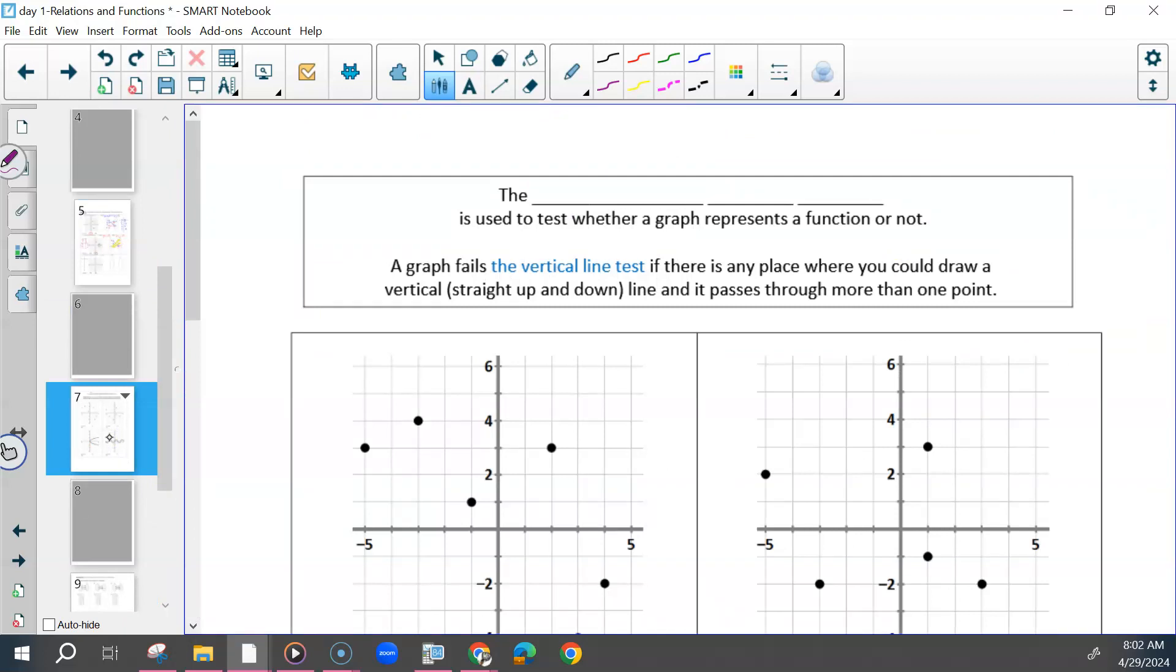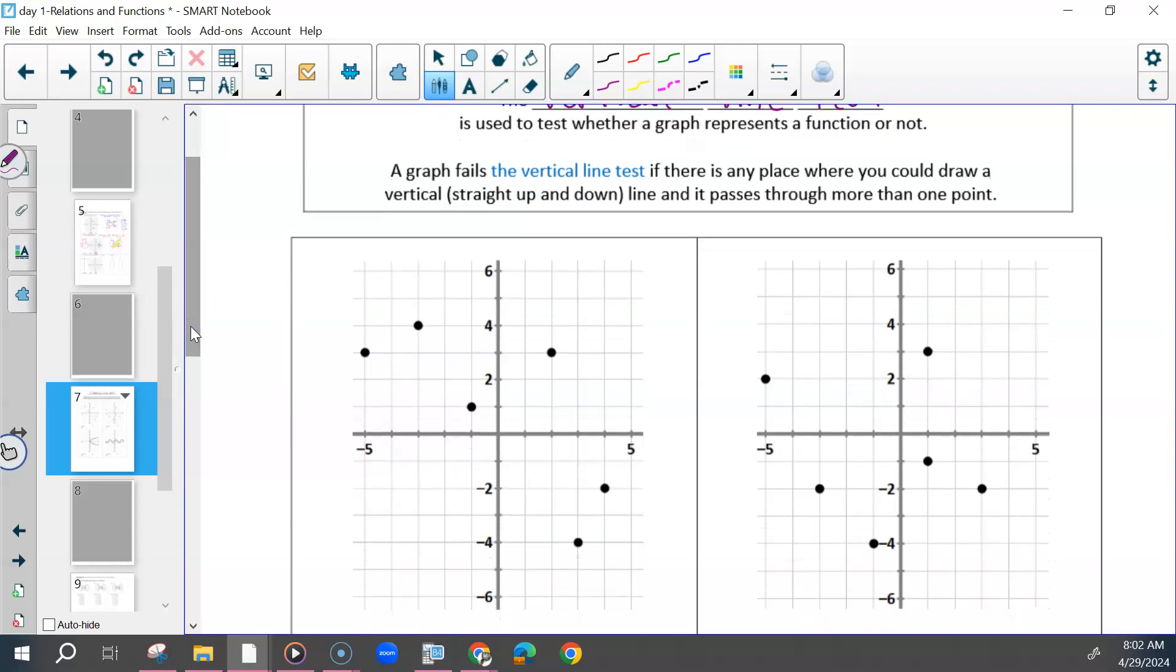So there's one more way to test if it's a function or not. If I were to draw a vertical line anywhere, straight up and down, and it touches more than one point, it does not pass the vertical line test, it's not a function. But if I draw a vertical line test anywhere on the graph, and it does not touch more than one point, or it only touches one point, then it passes and it is a function.